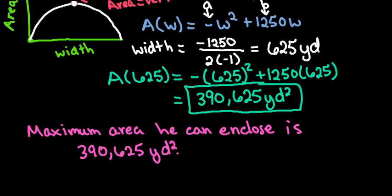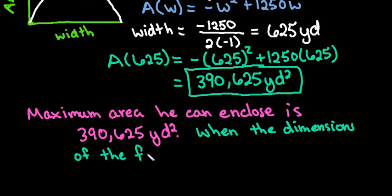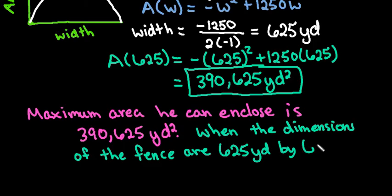So we could put that the maximum area he could enclose is 390,625 square yards when the dimensions of the fence are 625 yards by 625 yards.